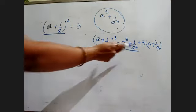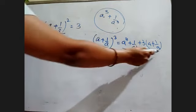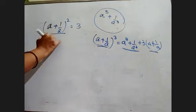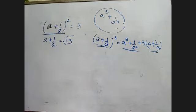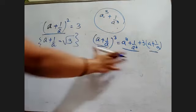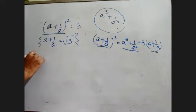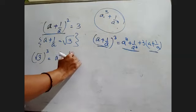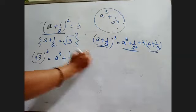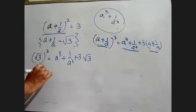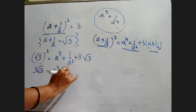This formula will be used. From here, a + 1/a whole square is 3, so a + 1/a will be √3. If this is √3, then I have to just substitute the value in this equation. Ultimately what am I getting? I'm getting (√3)³ = a³ + 1/a³ + 3√3. Now, (√3)³ is also 3√3.